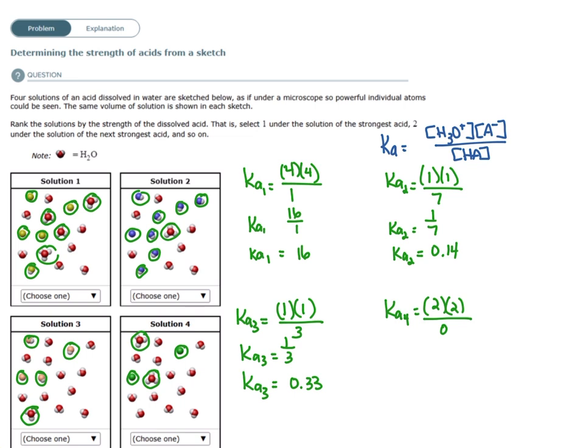All right, so let's compare these values. Now, mathematically, for solution four, you're not allowed to have a zero in the denominator. So this just means that there's all of the HA dissociated. So there isn't any HA left in solution. So that is the definition of strong acids. So our fourth solution gets the rank number one. The second highest would be solution one. So we would get that as a two. And our third one would be solution three. And our fourth one would be solution two.